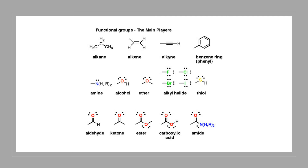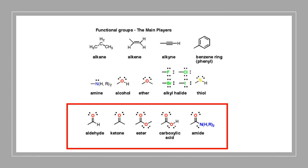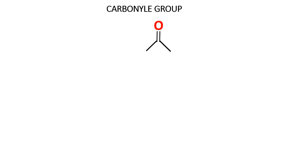Let's tackle the last group in this series: the aldehyde, the ketone, the ester, the carboxylic acid, and the amide. This involves a little bit of storytelling. Let's take a look at the carbonyl group. This structure — a carbon-oxygen double bond — is the basis of all of the other structures in the carbonyl group.